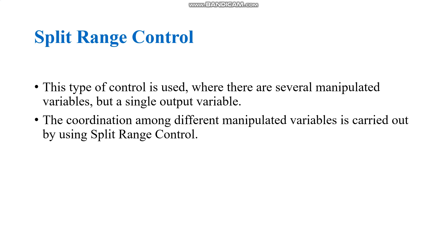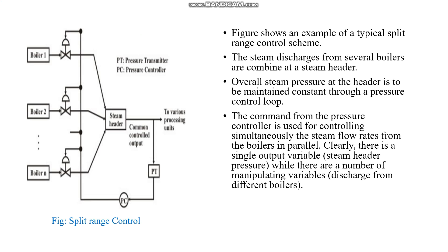The coordination among different manipulated variables is carried out by using split range control. Now you can see in this example, there are a number of boilers placed and there is one control variable that is the steam header.